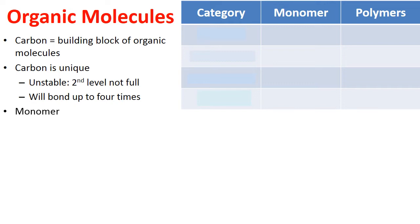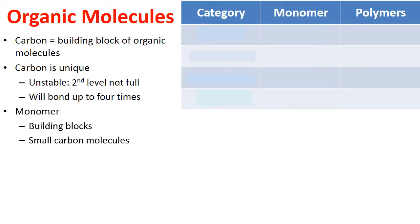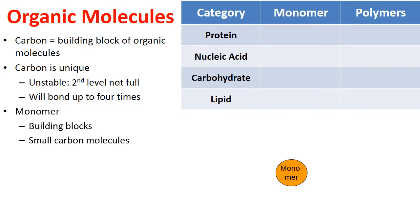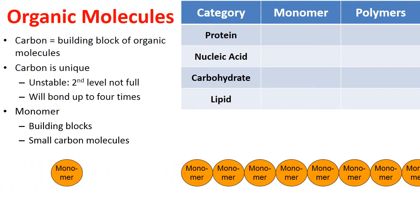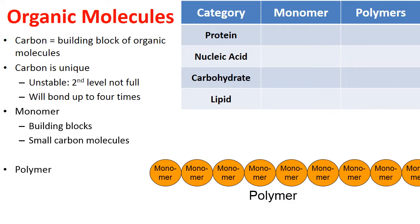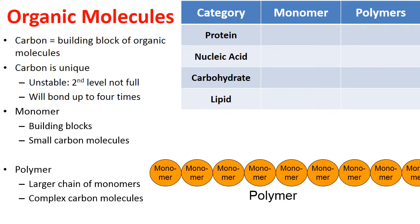When we talk about organic molecules, we want to talk about their monomers — the building blocks. Monomers are small carbon-based organic molecules. There are four categories: proteins, nucleic acids, carbohydrates, and lipids. Each is made from small building blocks called monomers. When a bunch of monomers join and bond together, they make a larger chain called a polymer. Polymers are larger chains of monomers and complex carbon-based molecules.